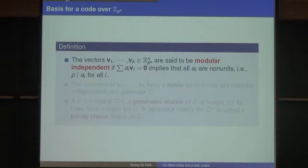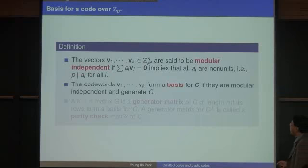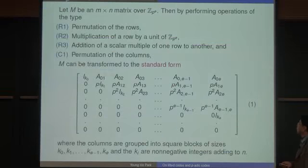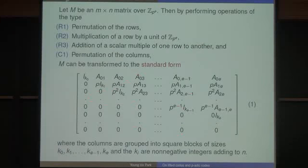The generator matrix of a code is also defined over the ring Z/p^e. The vectors V1 through VK are said to be modular independent if the summation A_i V_i equals 0 implies that all A_i are non-units. Those vectors form a basis for C if they are modular independent and generate C. The K-by-N matrix consisting of this basis will be a generator matrix, and the generator matrix for C-perp is the parity-check matrix. Any matrix over Z/p^e can be transformed into a standard form.